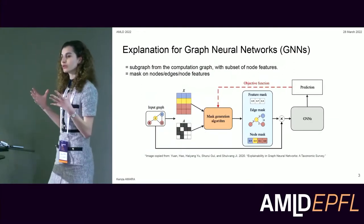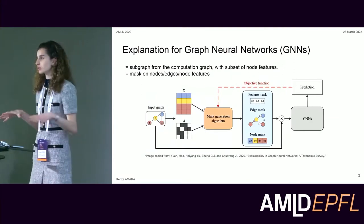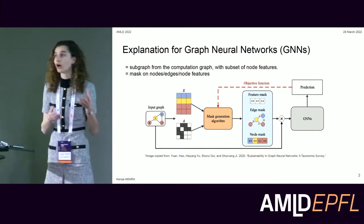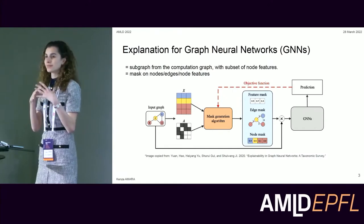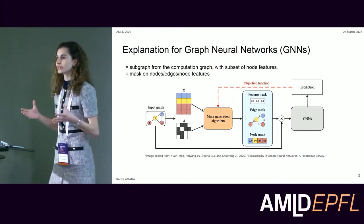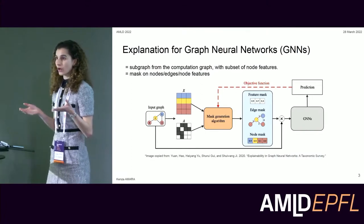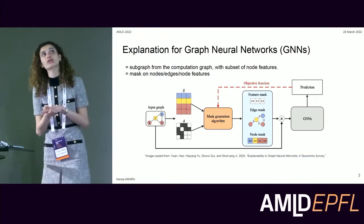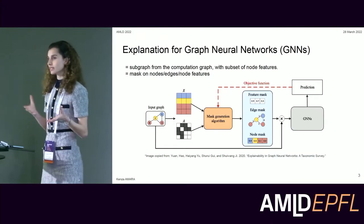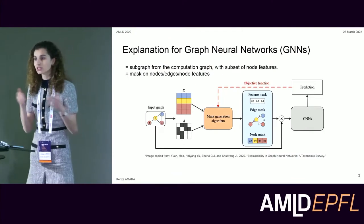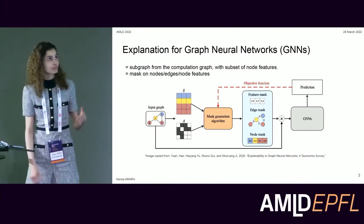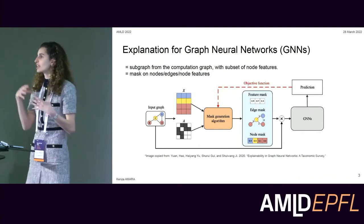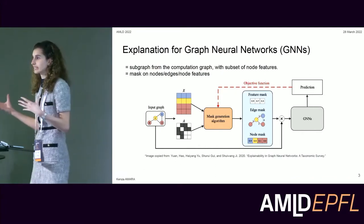To increase our control over these financial systems, but also the trustworthiness and accountability of these algorithms, it has become essential to provide stakeholders with understandable explanations of the logic and predicted outcomes of the graph neural network. A good explanation is a subset of edges, nodes, and node features that contribute the most to the information flow that leads to the predicted outcomes of the models.